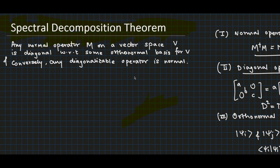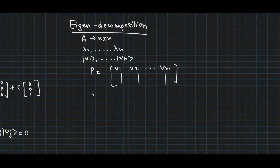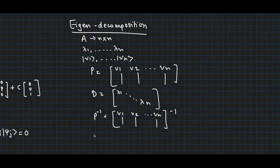Before starting the proof, let's look at eigendecomposition. Let A be an n-by-n matrix with eigenvalues lambda-1 to lambda-n and corresponding eigenvectors v1 to vn. The matrix A can be decomposed as A equals P D P-inverse, where P is the matrix with columns as the eigenvectors, D is the diagonal matrix of eigenvalues, and P-inverse is the inverse of P.